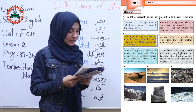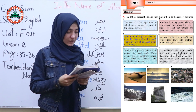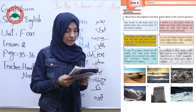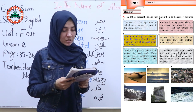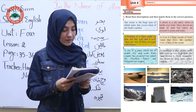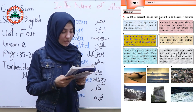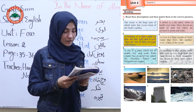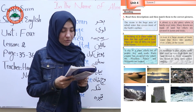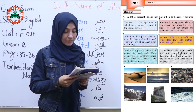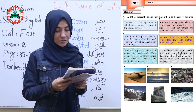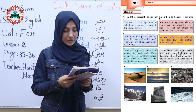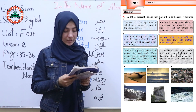Number 3: A building is a place made by men that has walls and a roof. There are a lot of different types of buildings. Number 4: A river is a large stream of fresh water that flows into another river, a lake, or the ocean.